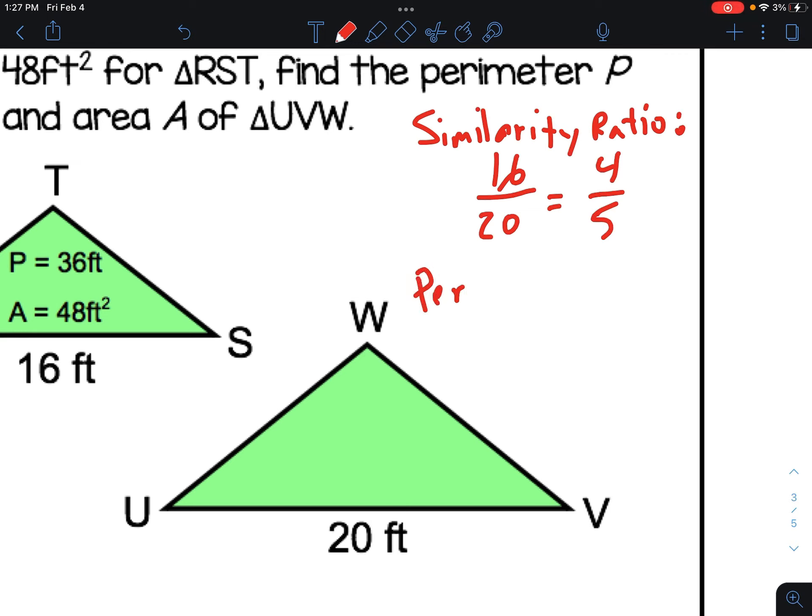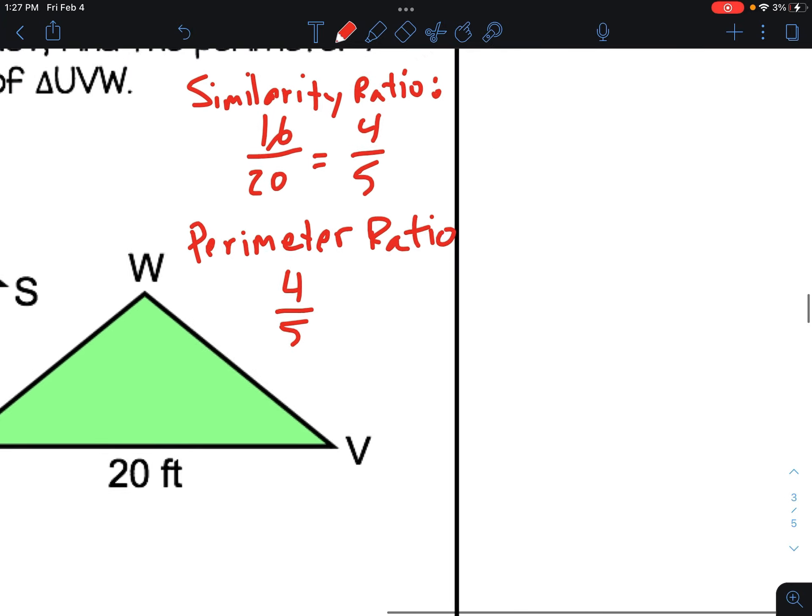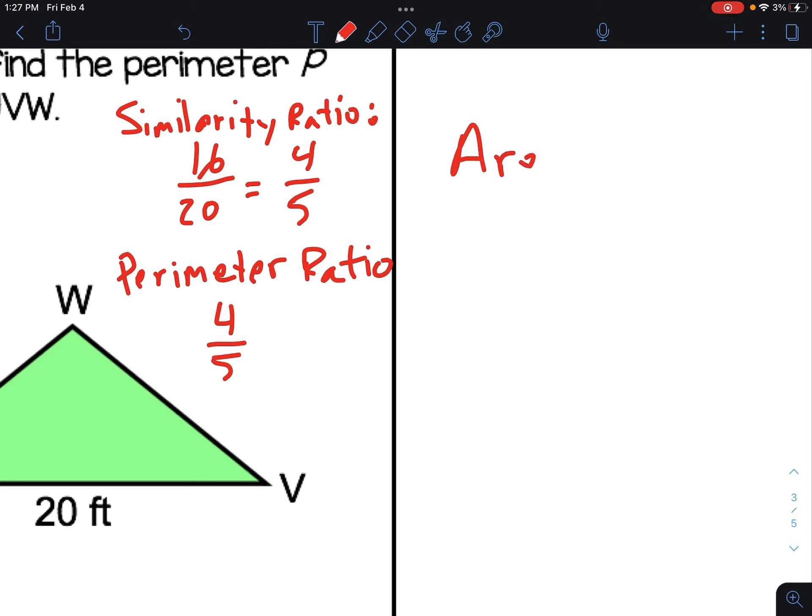Well, we just said the perimeter ratio is the same, 4 to 5. And the area ratio was that a squared to b squared. So we have our ratios. How are we going to apply them?